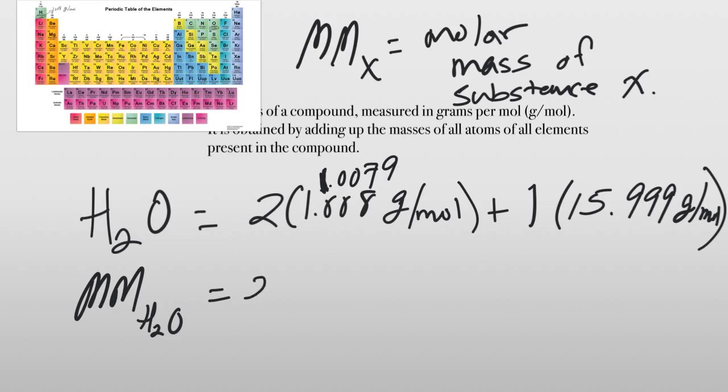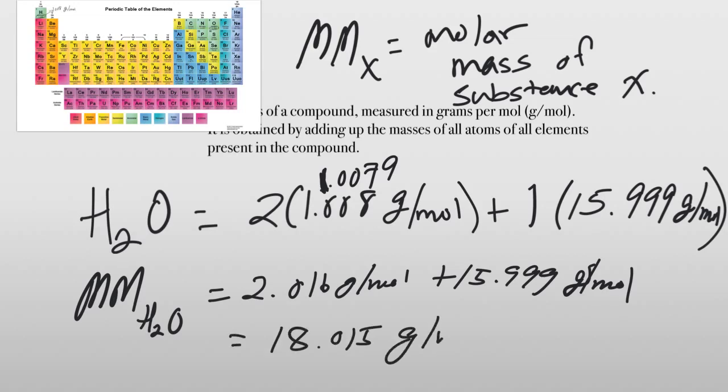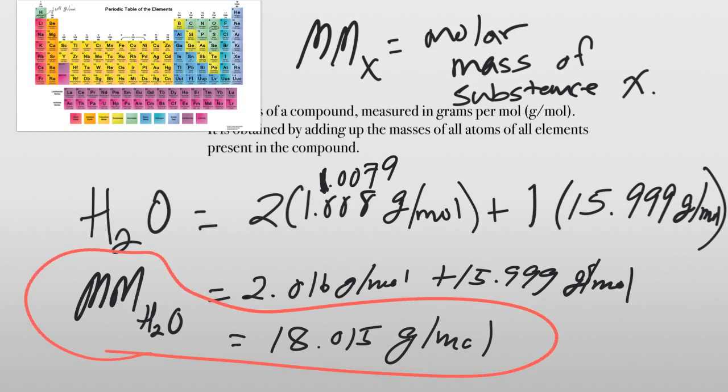Two times that is 2.016 grams per mole, and we'll add to that 15.999 grams per mole. And we get 18.015 grams per mole for water. And that is its molar mass. Now we're adding here, so we have three decimal places. Three decimal places. Our answer should be to three.